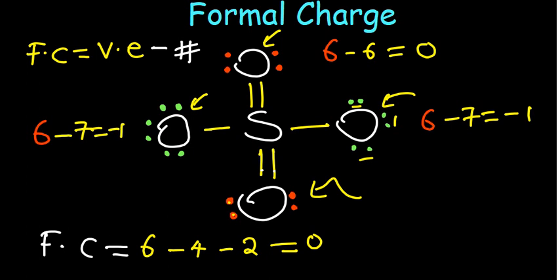And then the sulfur. The sulfur itself has how many bonds around it? One, two. So it has two double bonds. That makes it four plus two, six. Six minus six is zero, since it's also from group six.